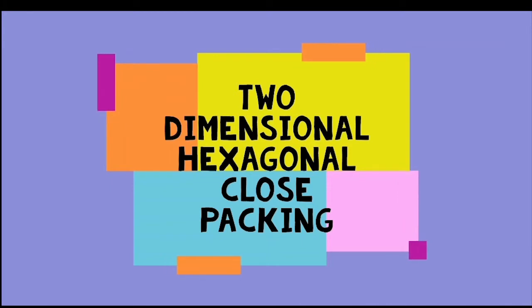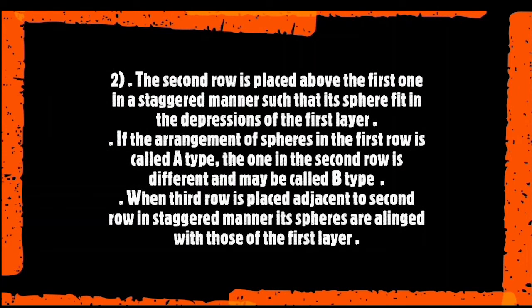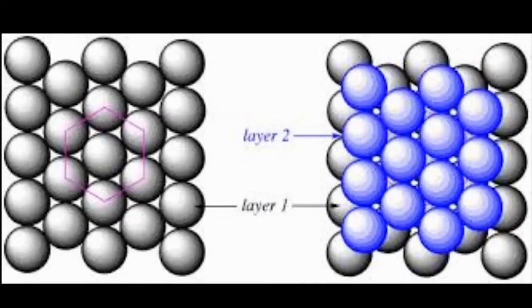The second row is placed above the first row in a staggered manner such that the spheres fit in the depression of the first layer. If the arrangement of the spheres in the first layer is called A-type, the one in the second row is different, called B-type. When the third row is placed adjacent to the second row in staggered manner, its spheres are aligned with those of the first layer.